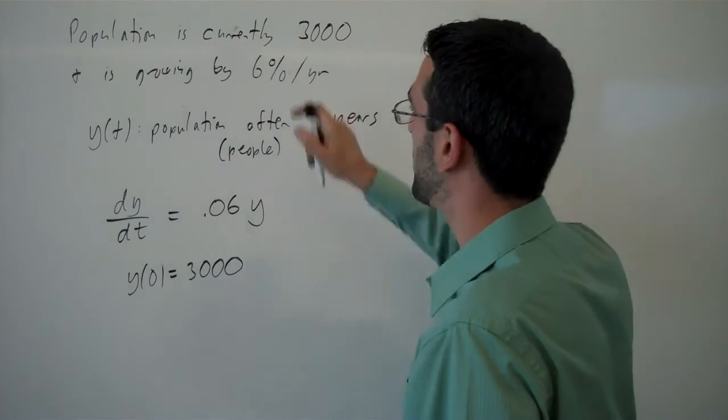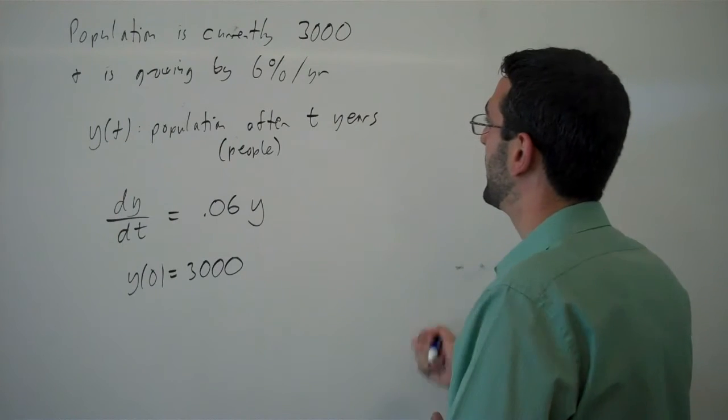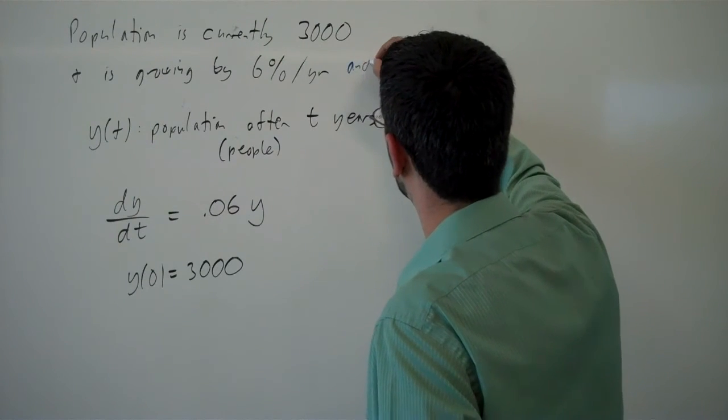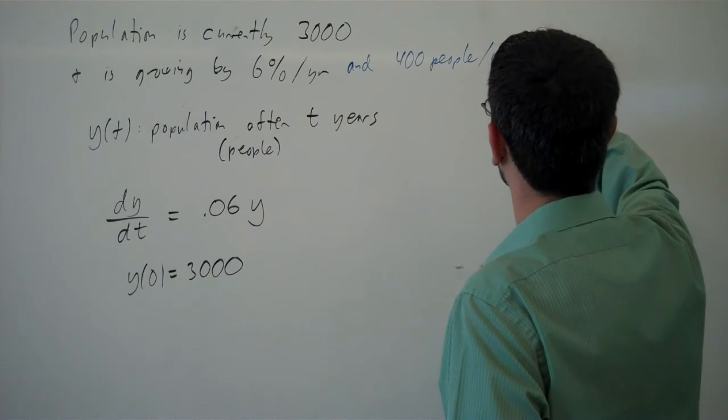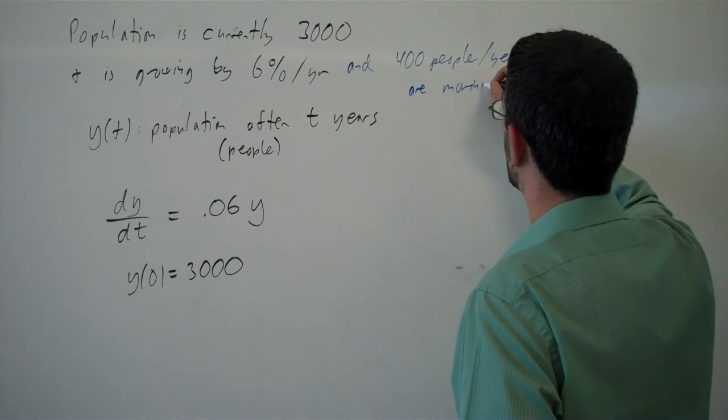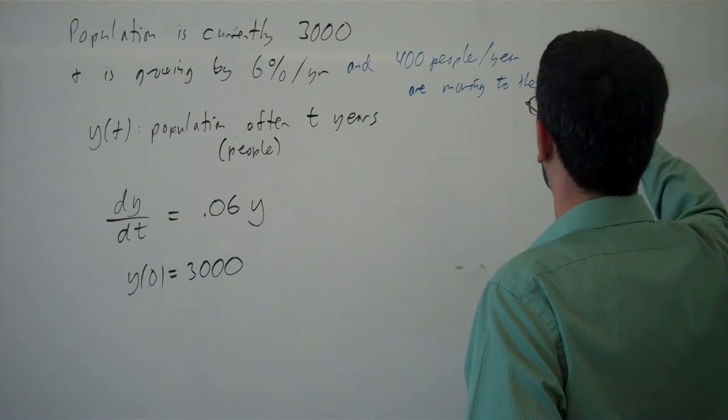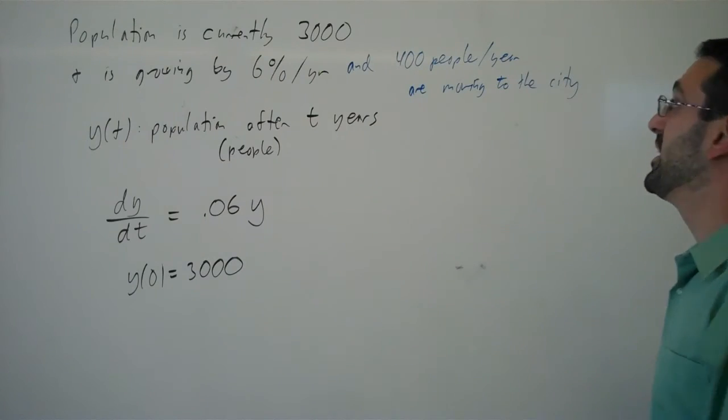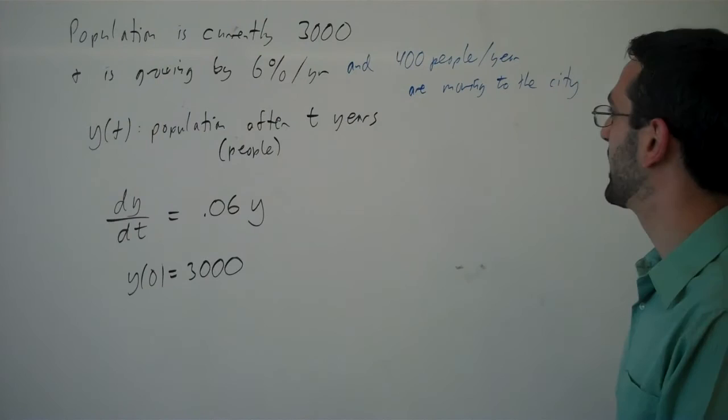So suppose now the population is currently 3,000 and is growing by 6% per year, and 400 people per year are moving to the city, or town. Anyway, 400 people per year are immigrating into the area.